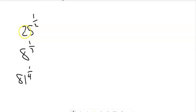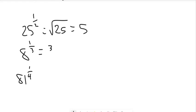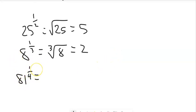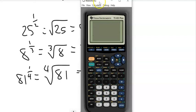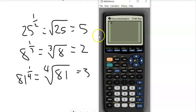For example: 25 to the 1/2 power is the same as the square root of 25, which is 5. Or 8 to the 1/3 power is the cube root of 8 — what to the third power is 8? That's 2. And 81 to the 1/4 is the fourth root of 81, which is 3. If you don't know those, grab your calculator.